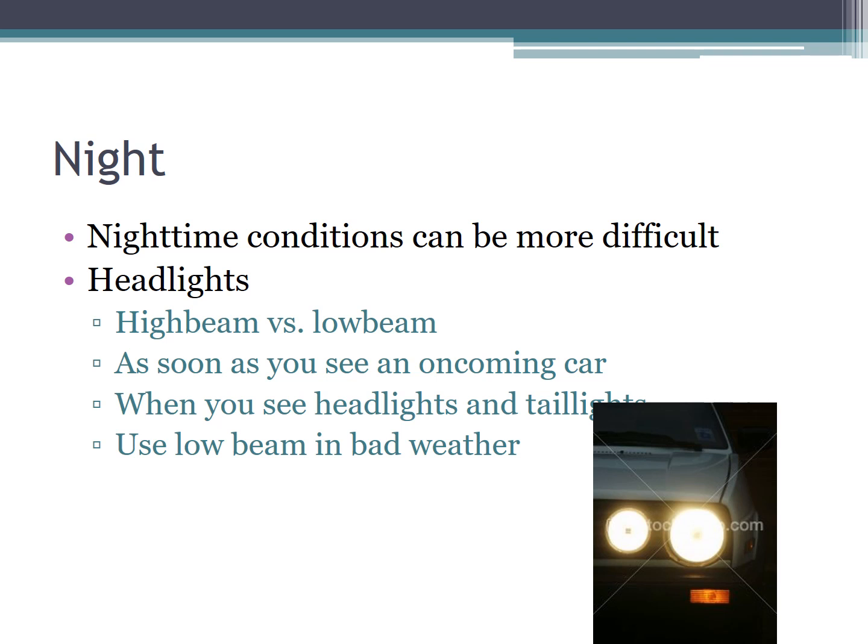At nighttime you need to have your lights on. High beam lights shine more directly in front of the car, so they illuminate more than low beam lights, which are your regular lights — those are what you'll use most nights. If you see an oncoming car, turn your high beams off. If you're following somebody, turn your high beams off as well. Anytime you're in bad weather, use your regular lights and not your high beams.